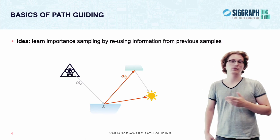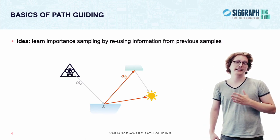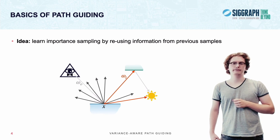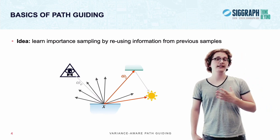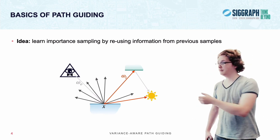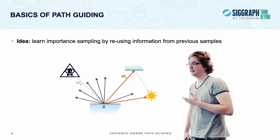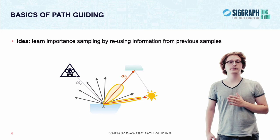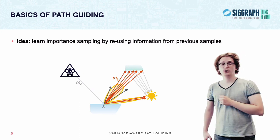In reality, most rays will actually not end up at any light source. They will essentially just waste time. What guiding does to mitigate this is it looks at samples that we've already seen to build a distribution that we can then use to focus our following samples on the regions where they actually matter most.